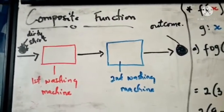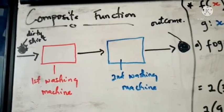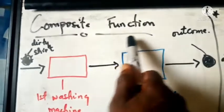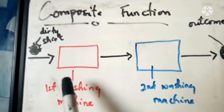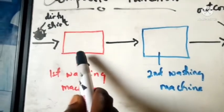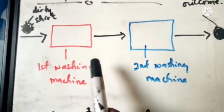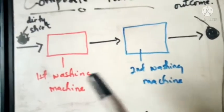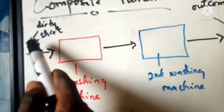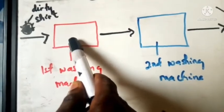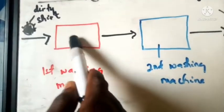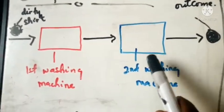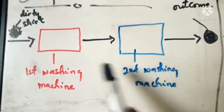Let's look at composite functions and understand exactly how they work. This is a simple diagram to demonstrate how composite functions work. Think of it like having two different washing machines. You have a dirty shirt and you put it into the first washing machine. After washing it there, you remove it and place it into the second one because you want your clothes to be very neat.